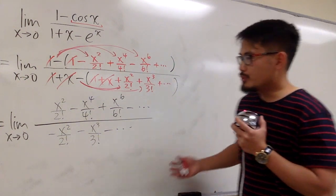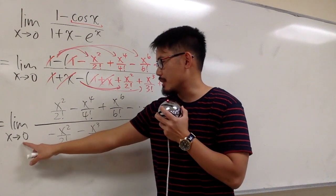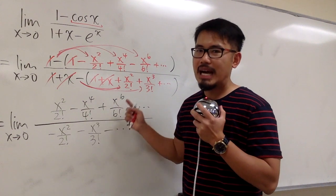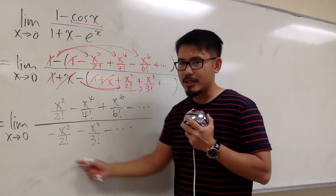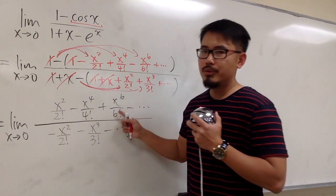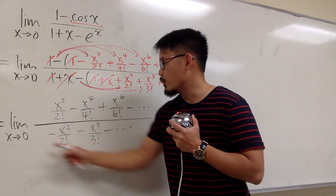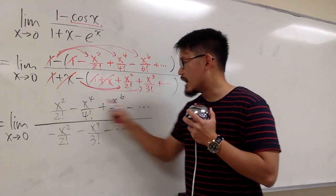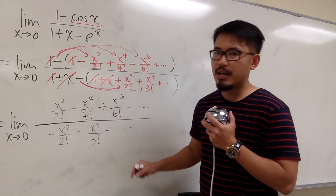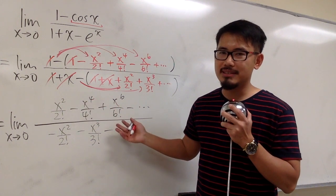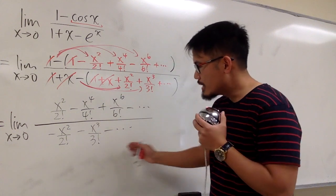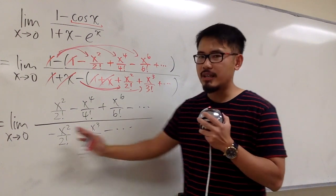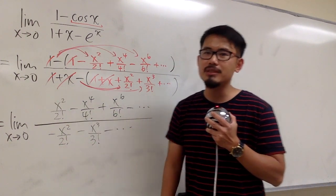Usually after the cancellations we just plug in 0 for all the x's. But unfortunately, all terms on the top and bottom still have an x. Plugging in 0 gives 0 over 0 — that's no good. However, on the top we have x squared, x to the 4, x to the 6 — they all have x squared at least, so we can factor out x squared. Likewise on the bottom, x squared, x cubed, etc. — we can also factor out x squared, and the x squared terms cancel.